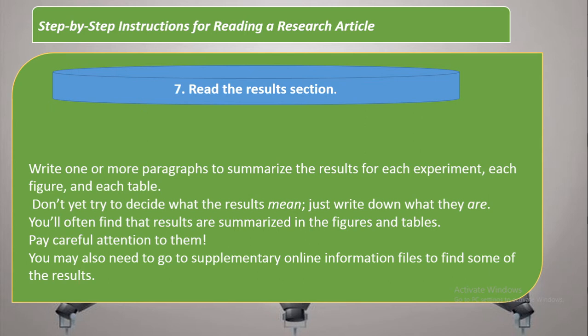The seventh step is to write one or more paragraphs to summarize the results. For each experiment, summarize the results from each figure and each table. At this stage, do not yet try to decide what the results mean — just write down what they are. You will often find that results are summarized in figures and tables, so pay careful attention to those in the paper.